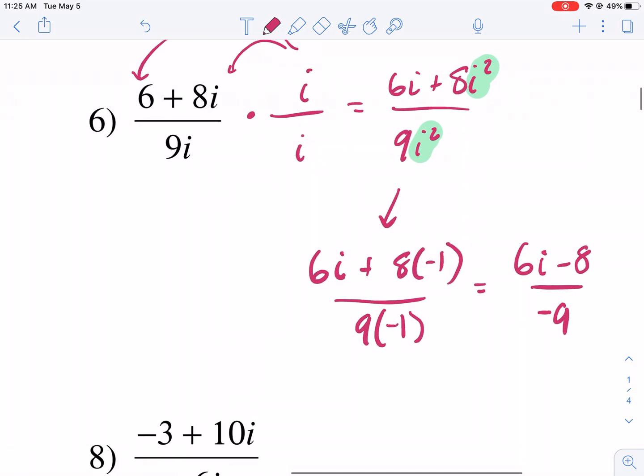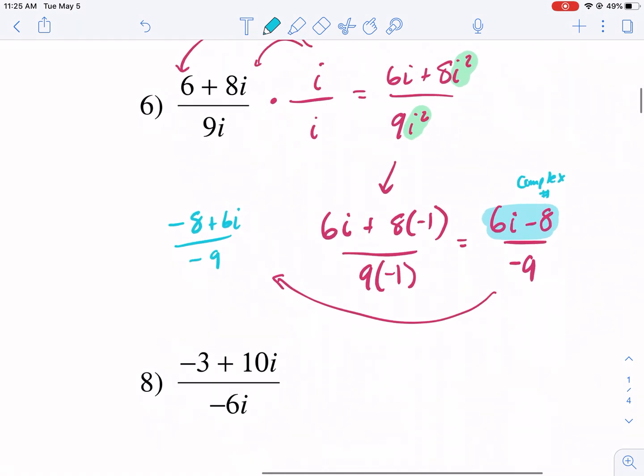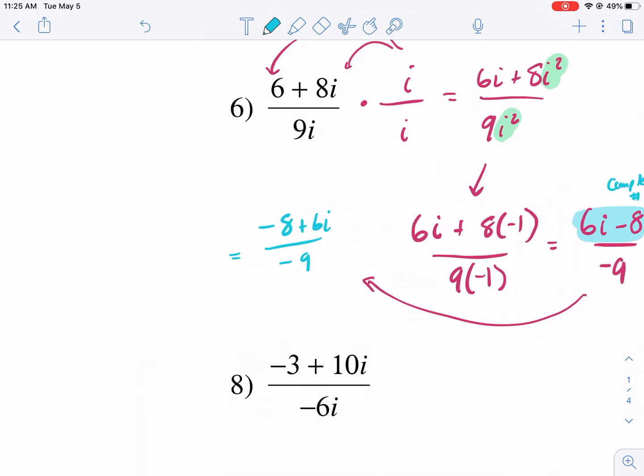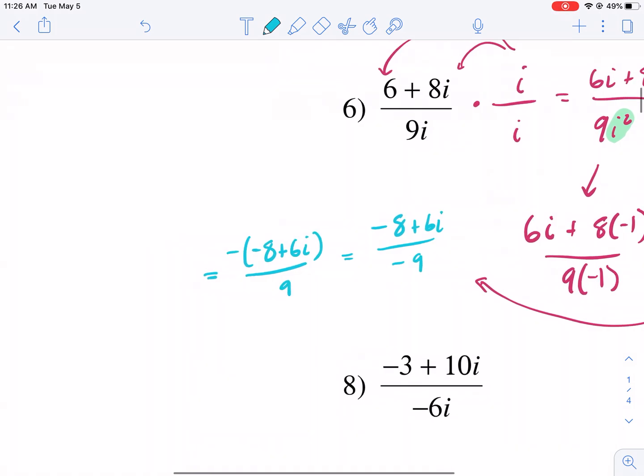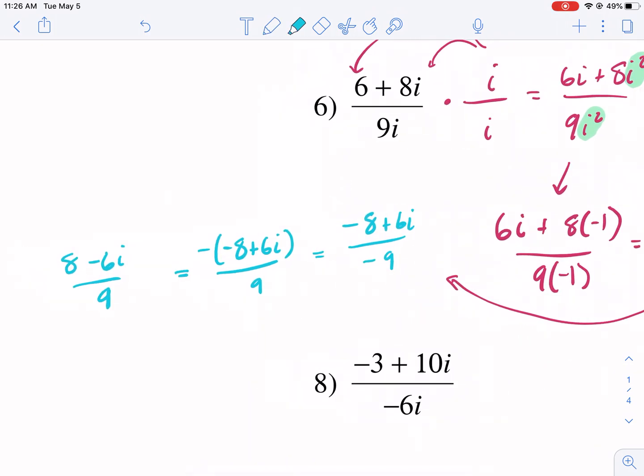So we're going to change this to 6i plus 8 times negative 1 over 9 times negative 1. So we get 6i minus 8 over negative 9. What I'm going to do here is I'm going to put it into how you normally see complex numbers. In this case, a complex number has a real part and an imaginary part. The real part usually goes first. So this is a complex number. So we're going to put the real part first. We're going to write negative 8 plus 6i over negative 9.